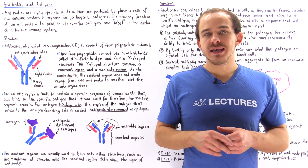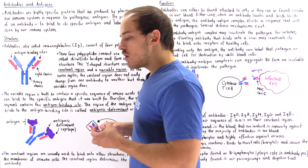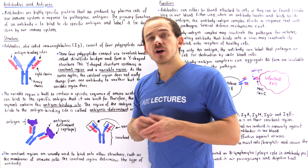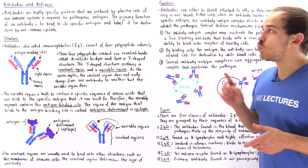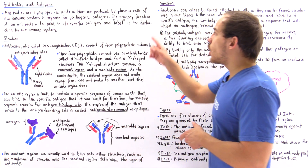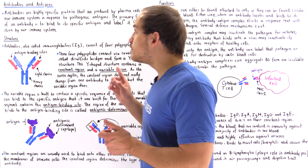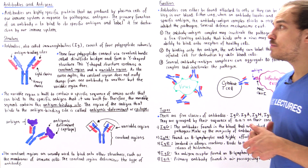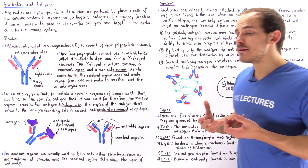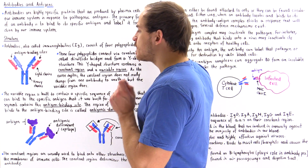Whenever a pathogen invades our body, it brings along its own proteins, its own nucleic acids, and its own polysaccharides. These different things that the pathogen brings are known as antigens. The immune cells of our body are capable of identifying these different antigens. Once the white blood cells identify the antigens, specialized types of B lymphocytes known as plasma cells can begin producing antibodies, which are highly specific proteins that can bind onto these antigens. Once the antibody is bound to that specific antigen for which it was built, it elicits some type of defensive mechanism — it essentially labels that antigen along with the pathogen for destruction by our immune system.